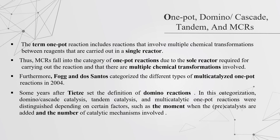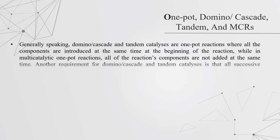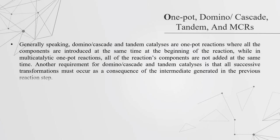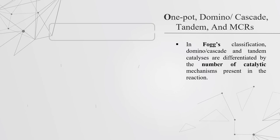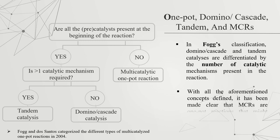Generally speaking, domino, cascade, and tandem catalysts are one-pot reactions where all components are introduced at the same time at the beginning, while in multi-catalyzed one-pot reactions, all components are not added at the same time. Another requirement for domino, cascade, and tandem catalysts is that successive transformations must occur as consequences of the intermediates generated in the previous reaction steps. Domino, cascade, and tandem catalysts are differentiated by the number of catalytic mechanisms present in the reactions.